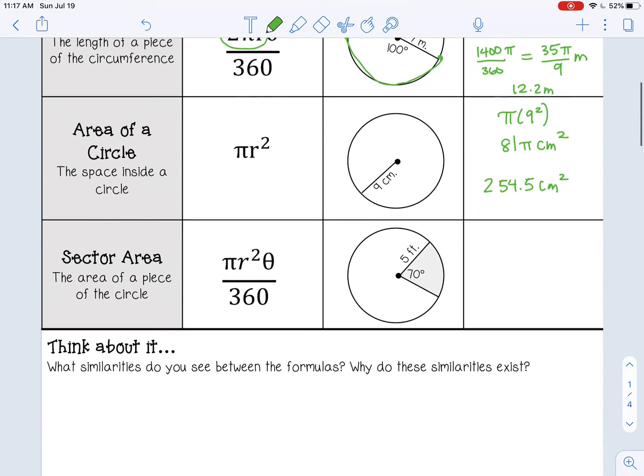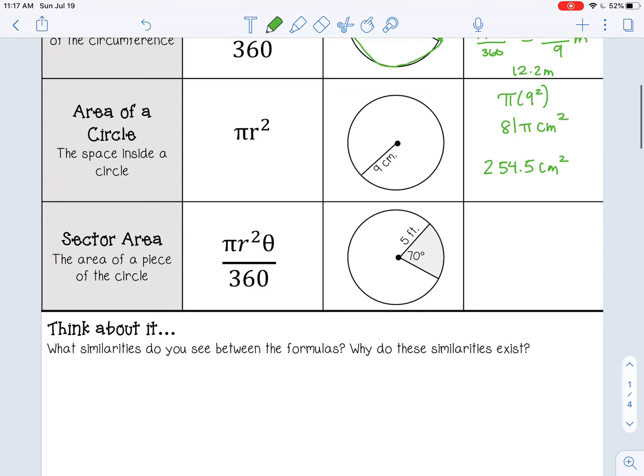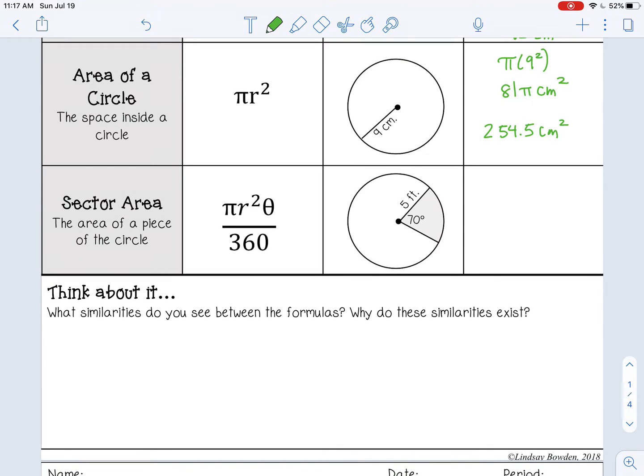Sector area is new. Remember, a sector is a piece of the area. We don't want to find the whole area. We just want one piece of it. So the formula is πr², which notice that's the area formula, times θ is your central angle over 360. So π times 5² times 70 over 360, which gives you 175π over 36 feet squared. That's the exact, or 15.3 feet squared.